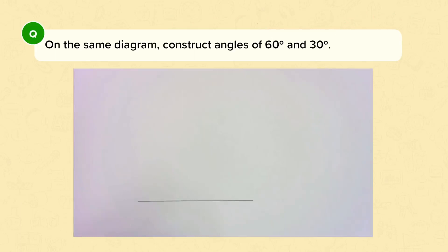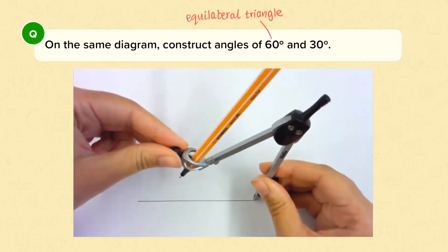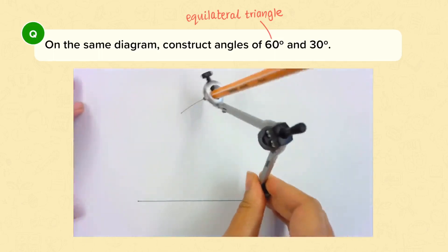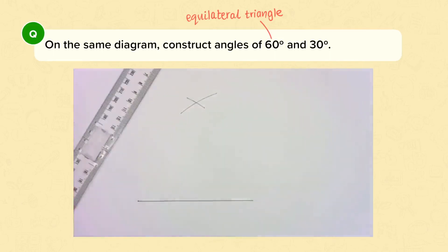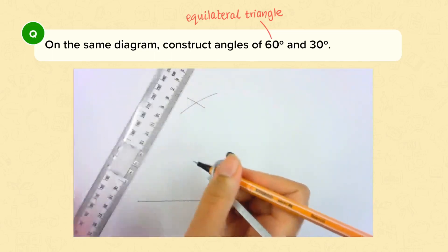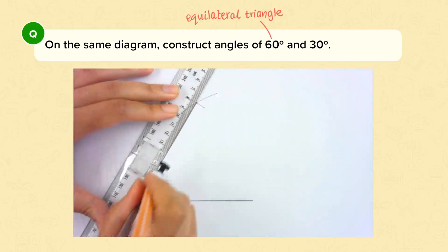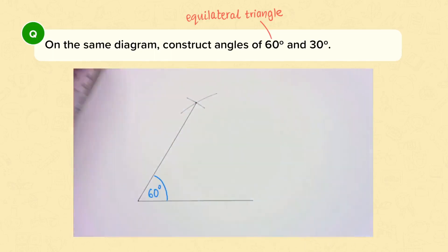Here are two more angles to construct. We'll start with 60 degrees, because once we have 60 degrees we can bisect that angle to get 30 degrees. Again, start by drawing a straight line with a ruler. Begin this construction as if you're about to construct an equilateral triangle: open your compass to the length of the line and draw an arc from each end. Where those two arcs meet, join that point to one end of your line. You will have constructed an angle of 60 degrees, because this uses the fact that each angle in an equilateral triangle equals 60 degrees.